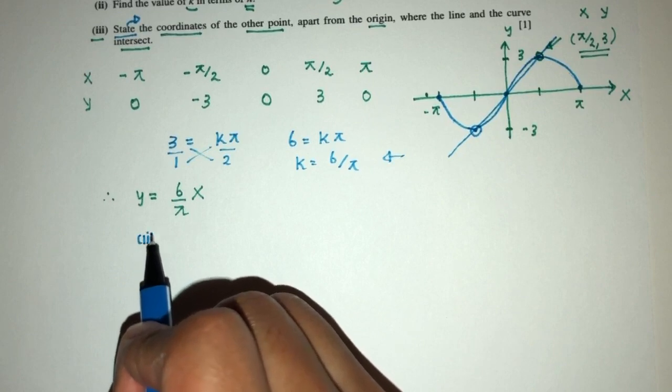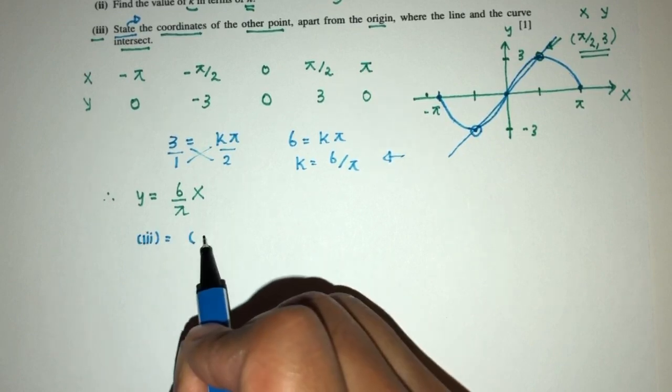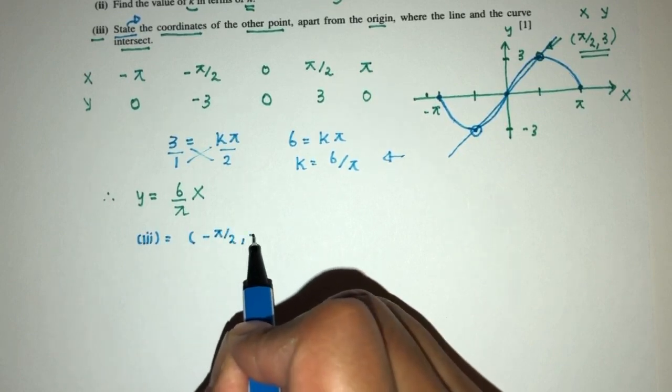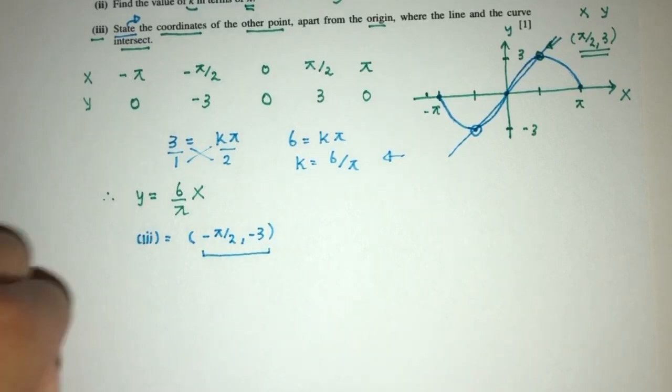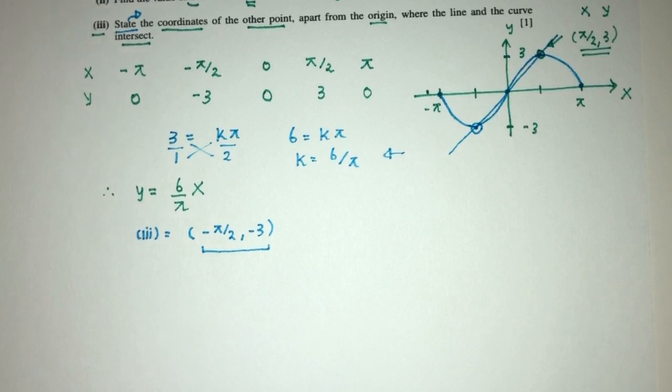So part 3 of the question, the point will be minus pi by 2 and minus 3, which is your minimum point on the curve. And that will be the question in relation to trigonometry.